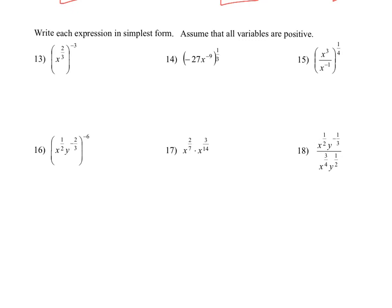Number 13, we've got a fractional exponent, a negative exponent, and also the power to a power rule — so we're going to multiply those exponents. When I multiply 2/3 times negative 3, I'm going to get x to the negative 2 power. We don't like to leave expressions with negative exponents, so that'll become 1 over x squared. Number 14, that exponent of 1/3 applies to everything inside the parentheses. So this will become negative 27 to the 1/3, x to the negative 3. I'm simultaneously going to change that into radical form: the cube root of negative 27 over x to the third, which equals negative 3 over x to the third.